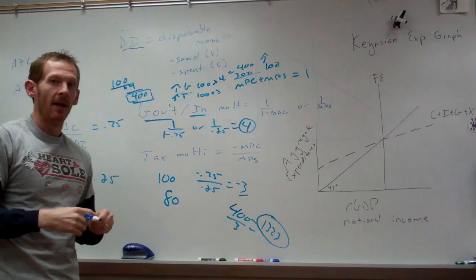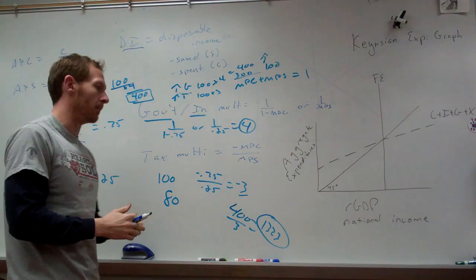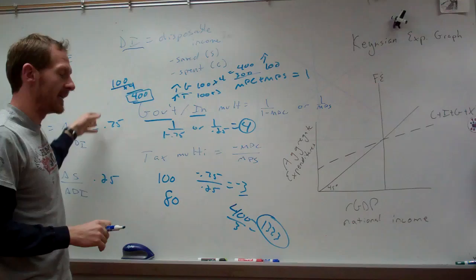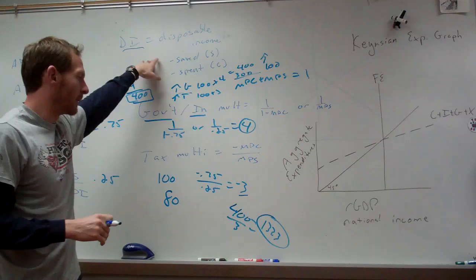To summarize, you should know APC and APS, MPC and MPS, the government and tax multipliers, and what disposable income is.